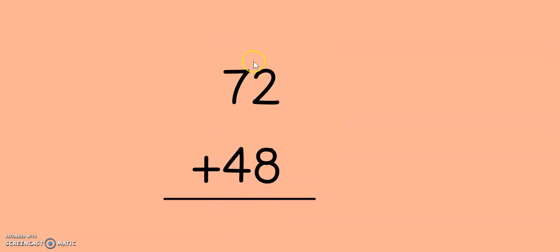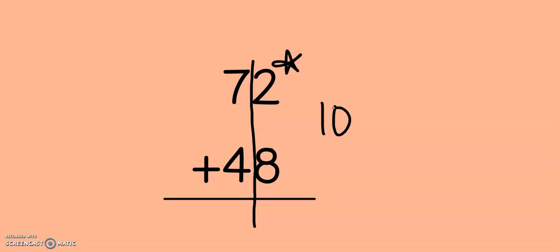Next we have 72 plus 48. As always, I start in the ones column. I have 8 plus 2 more: 8, 9, 10. If I have 10 ones, did I make a new 10, second grade? Yes, I did. There's my 10. So I move it over into the tens column, and I pull my 0 down to the bottom. Now let's go to the tens: 7 plus 4 plus 1. So I have 7, 8, 9, 10, 11, 12.